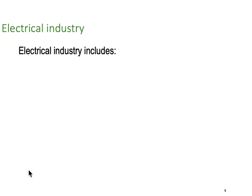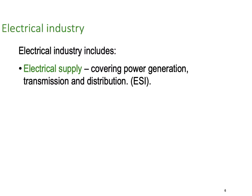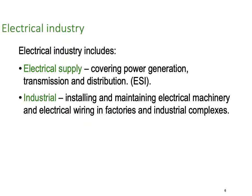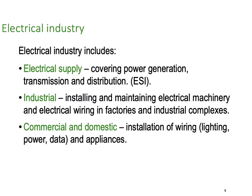The electricity supply industry, or ESI, covers generators, transmission, and distribution. We go out into industrial installations maintaining electrical machinery, electrical wiring, and factories in larger industrial complexes. Then we have commercial and domestic — installation of wiring like light, power, data, and appliances. Commercial might be things like bakeries or small factories, while domestic is people's houses, homes, and apartment blocks.